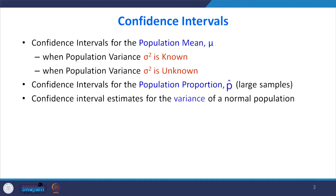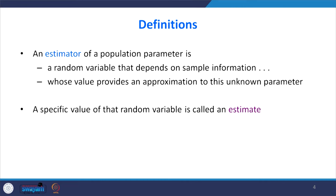We will also create a confidence interval estimate for the variance of the normal population. The topics covered today include: confidence interval for the population mean when population variance sigma squared is known, and when sigma squared is unknown; confidence interval for the population proportion P-hat using large samples; and confidence interval estimate for the variance of a normal distribution.